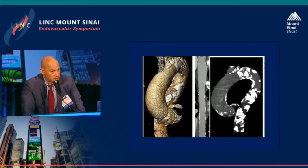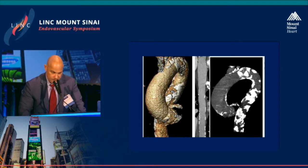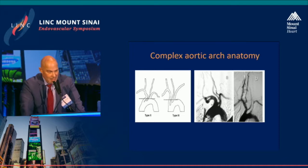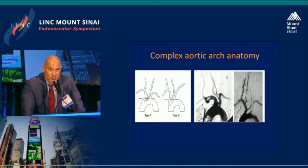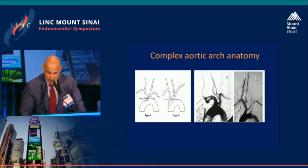Particularly when the aorta is heavily calcified, as you see in this image. The other problem is complex aortic arch anatomy. We classify these arches into type 1, type 2, and type 3 based on the origin of the brachiocephalic trunk in relationship with the aortic arch.